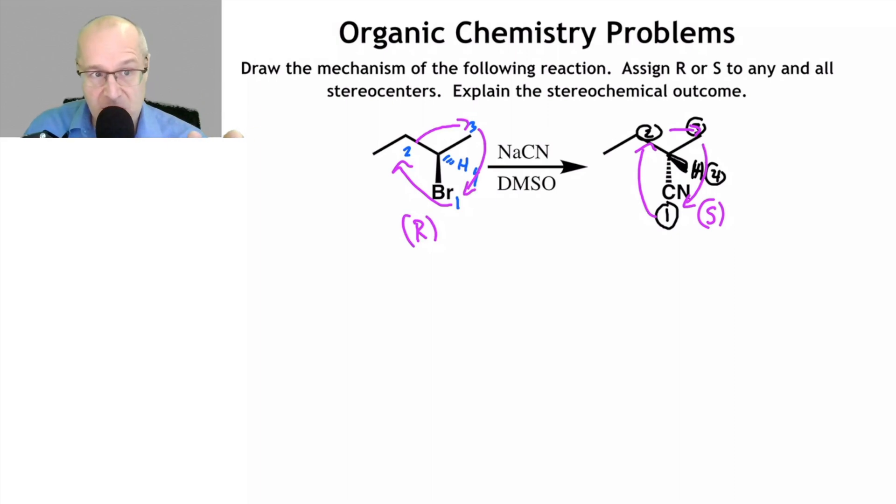How do I know this is SN2? First of all, polar aprotic solvent and a good nucleophile. CN minus cyanide, great nucleophile. So let's see the mechanism.